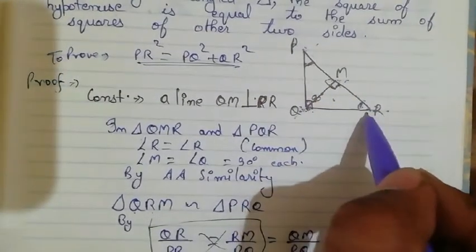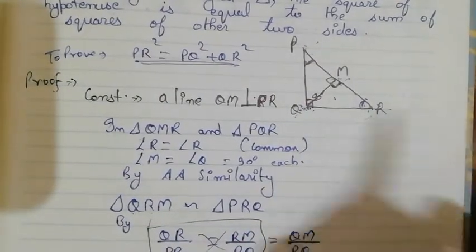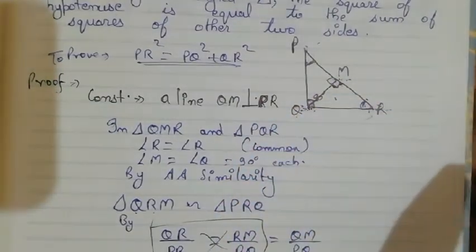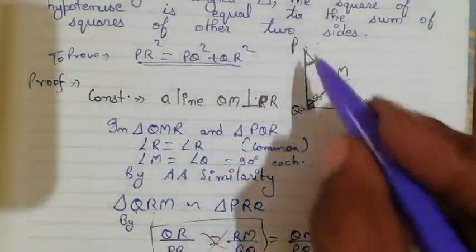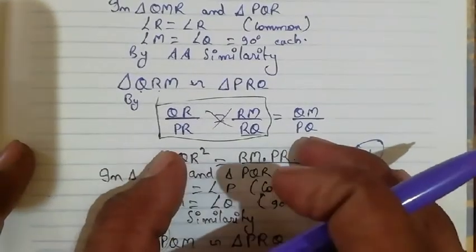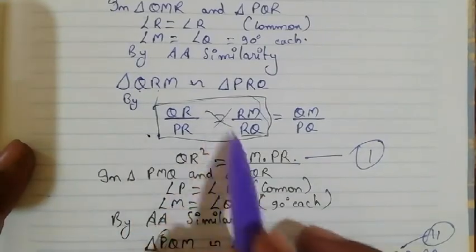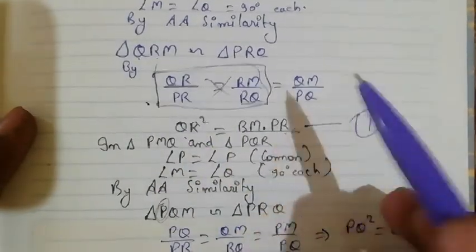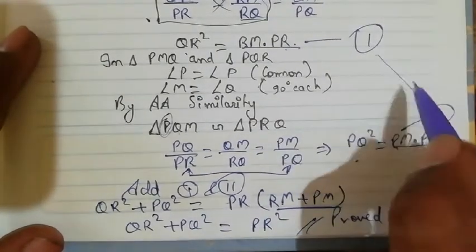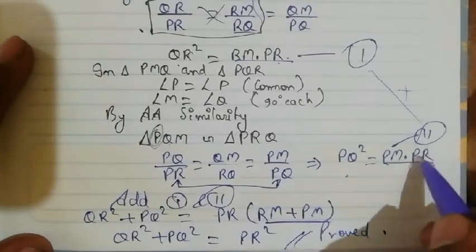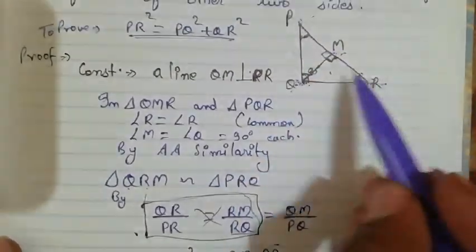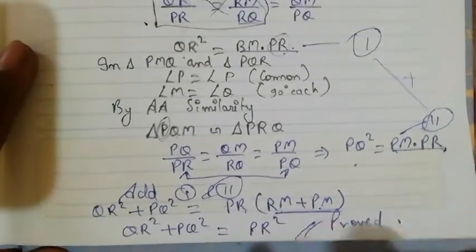To summarize: we proved triangle QMR is similar to PQR because one angle of both triangles is 90 degrees and one angle is common. Similarly, we proved triangle PMQ is similar to triangle PQR. From these similarities we got QR² = RM × PR and PQ² = PM × PR. Adding both equations and factoring PR, since RM + PM = PR, we proved the Pythagoras theorem.